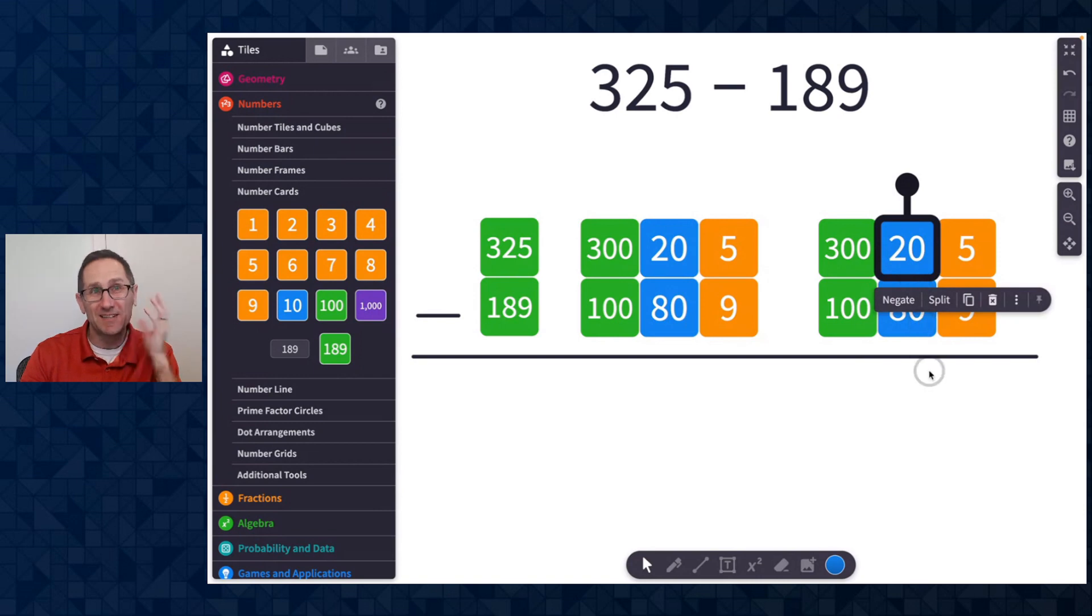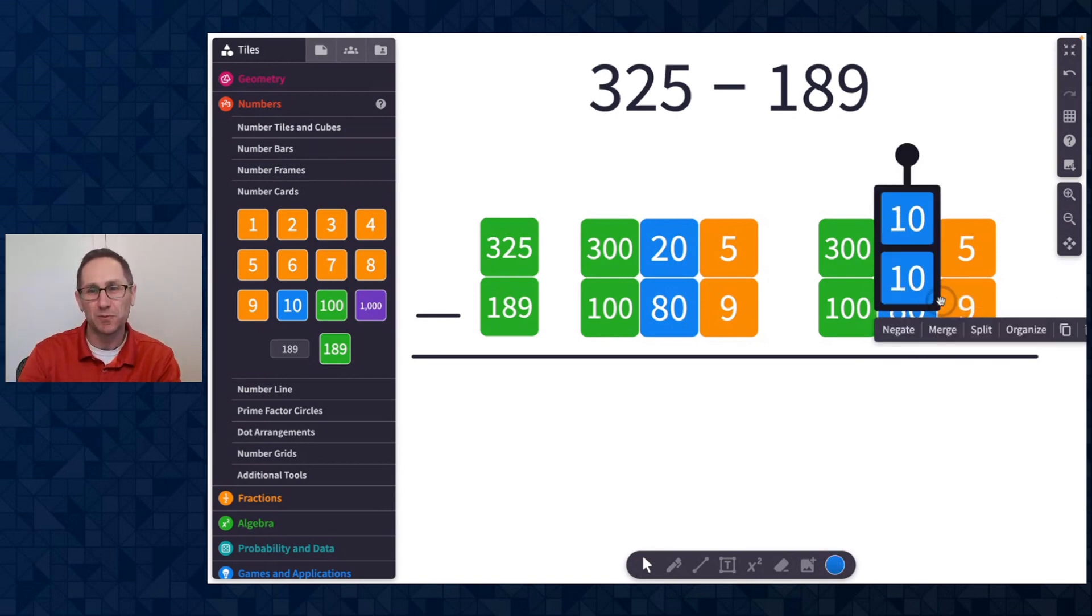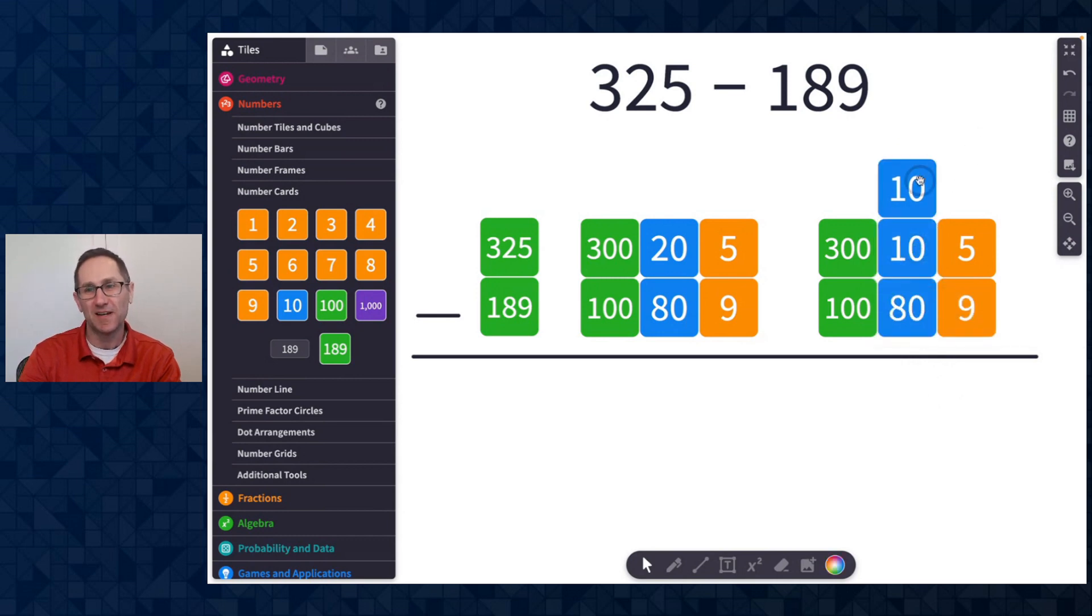I'm going to split it into two 10s and put a 10 on top of the 5. So I'll put this up, I get these two 10s, I'll take one of these 10s, and when I put it onto the 5, it's going to merge these together to make 15. So now I can see what was 20 and 5 has become 10 and 15.